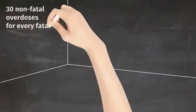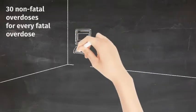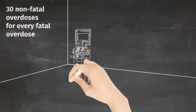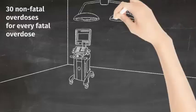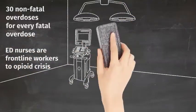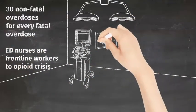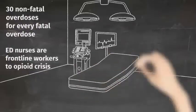It is estimated that for every fatal overdose, 30 more non-fatal overdoses take place. Emergency nurses are frontline workers to the opioid crisis, not only treating overdoses but also treating patients with abscesses, cardiac complications and a multitude of other complications that arise from opioid use.